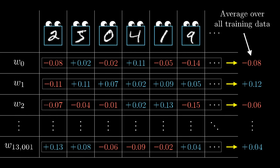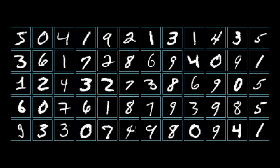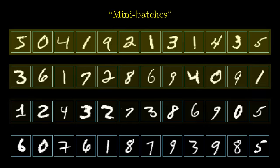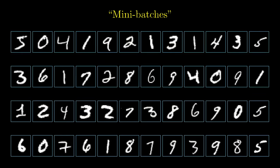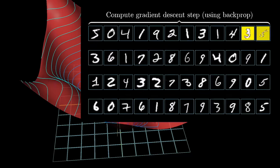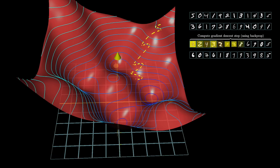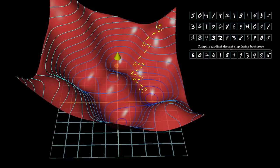But that's computationally slow, so instead you randomly subdivide the data into these mini-batches and compute each step with respect to a mini-batch. Repeatedly going through all of the mini-batches and making these adjustments, you will converge towards a local minimum of the cost function, which is to say your network is going to end up doing a really good job on the training examples.